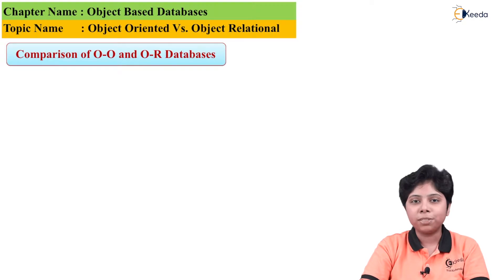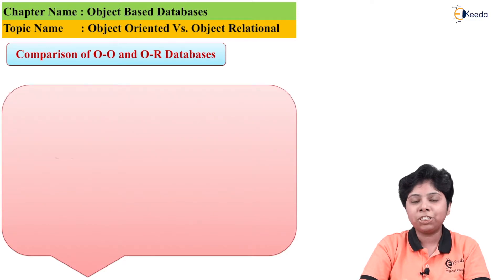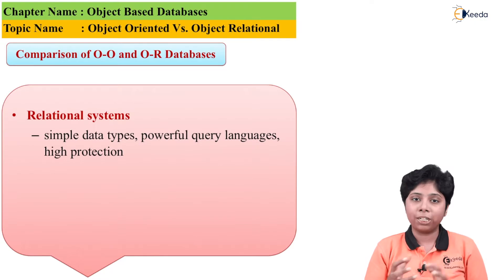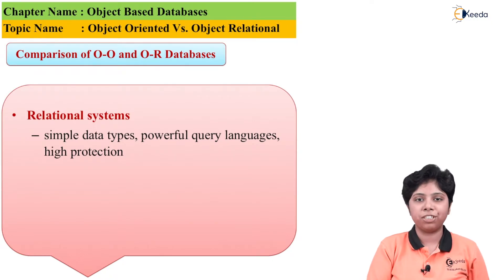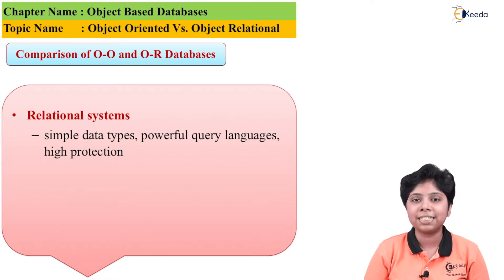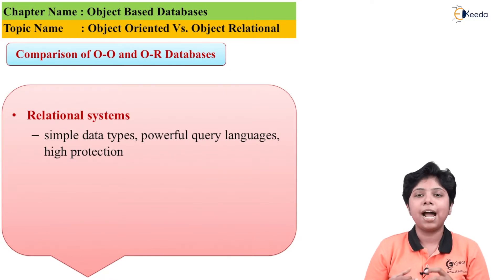An object-oriented database is based on a persistent programming language and follows an object-oriented paradigm. The object-relational mapping system is based on a relational model with an object-oriented layer on top of it. The object-relational data model is based on a relational model implementing object-oriented features. So the second and third are both based on a relational model, while the second has an attached object layer and the third has object-oriented features implemented into it.